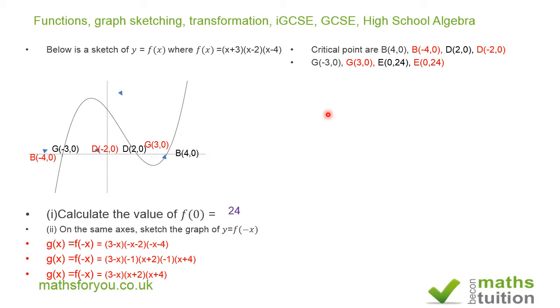All that points, we can sketch the point E, which is 0, 24 for both the original function and g of x. So that's what we got there. For both functions, that point gives us point E, which is 0, 24 there.